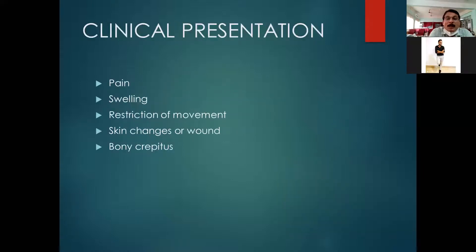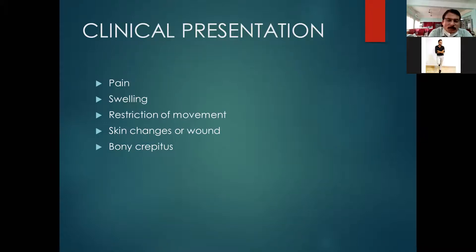Once the patient presents, they will necessarily have pain and restriction of movement of the elbow joint. You can see ecchymosis around the elbow joint, and if the fragment is displaced it can be palpated laterally at the elbow. This may also give a crepitus sound, which is one definitive sign of fracture.